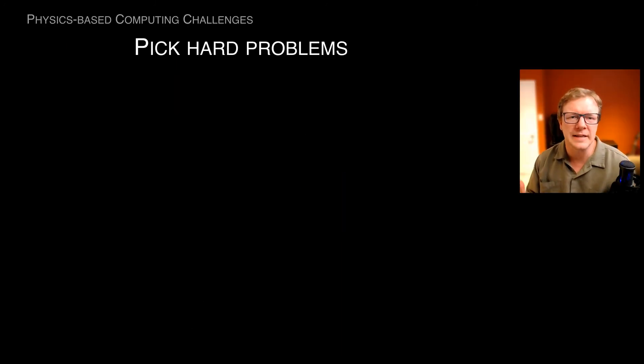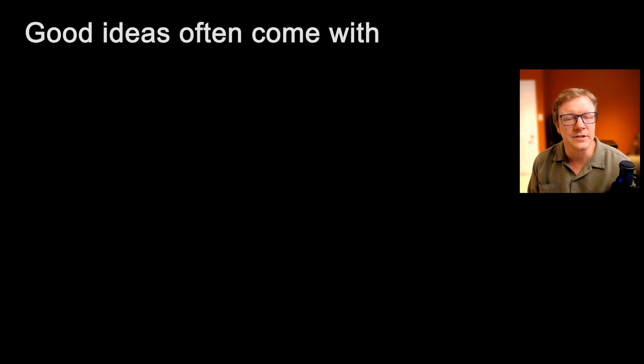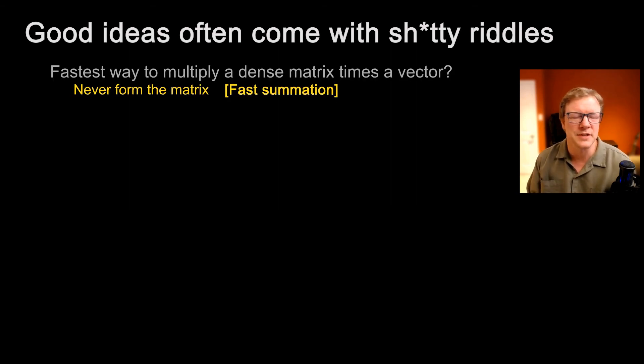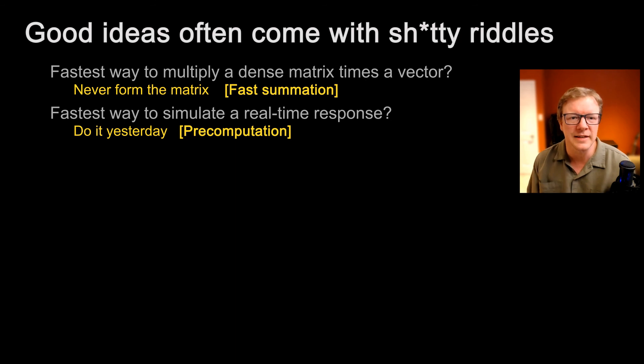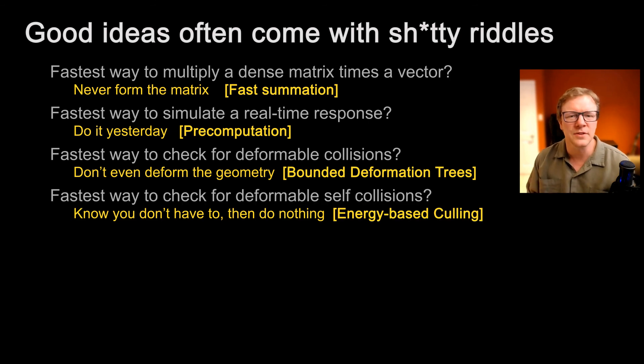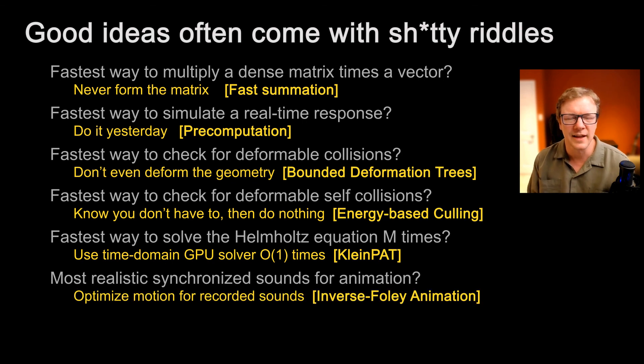Let me conclude by saying that if you pick hard or impossible problems, you'll be forced to be creative and essentially solve a weird riddle. So many good ideas often come with their own really weird riddles, where essentially you're finding an unexpected answer to the wrong question. The fastest way to multiply a dense matrix is never form it. The fastest way to simulate is to do it yesterday. The fastest way to check for collisions is to know you don't have to do things or not do things at all. And so there's all these delightful little answers to these riddles when you come up with these things. And I hope that you enjoy this and find your own.